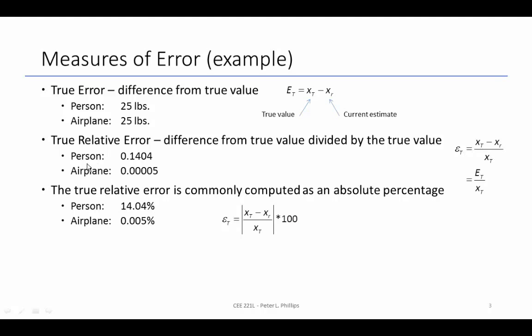So when we look at the example here, the person, the true relative error is 0.14 and the airplane is 0.00005. Usually these get expressed in terms of a percentage.